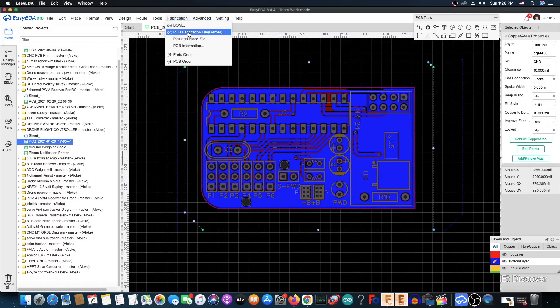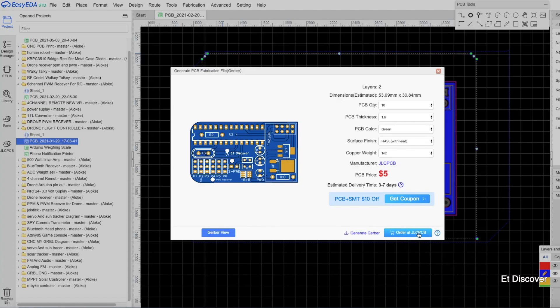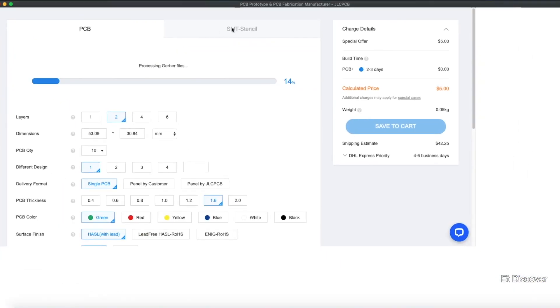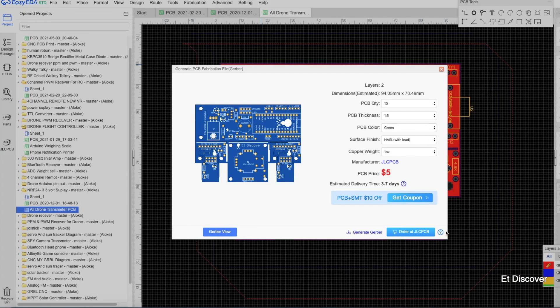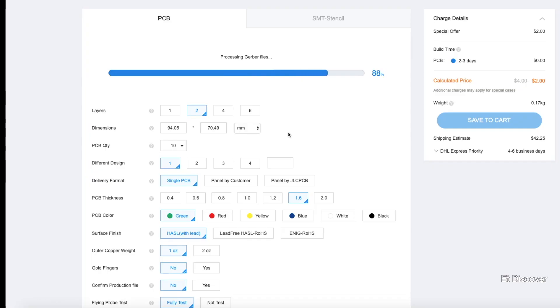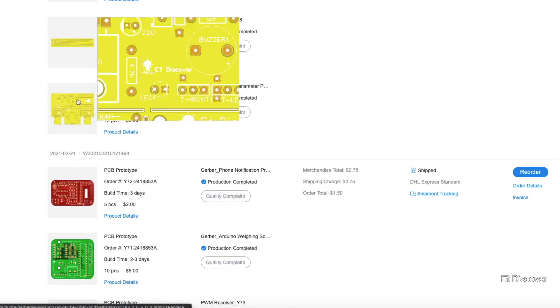OK, now I want to make all those PCBs in a professional way. So I will upload all those PCBs to the JLCPCB website. JLCPCB is one of the leading PCB prototype companies in the PCB world. Here I have ordered 3 types of PCB: the flight control board, transmitter board and PWM receiver board.